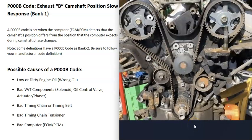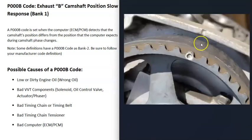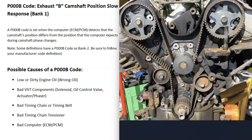The next thing that could cause this is a bad timing chain or timing belt. Timing belts and chains all have marks that need to line up, and if the belt or chain slips and those marks don't line up, that's going to throw everything off. There's also a tensioner that holds the timing chain or belt tight — if it's not holding everything tight, that's going to cause issues. These timing belts and chains can also become loose from old age, getting stretched out over many miles, which can throw off the timing and cause a P000B code.